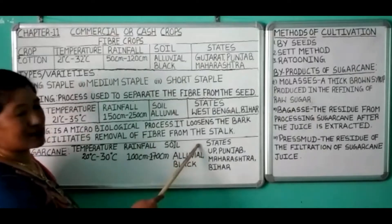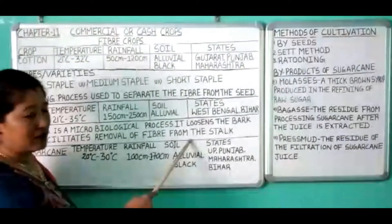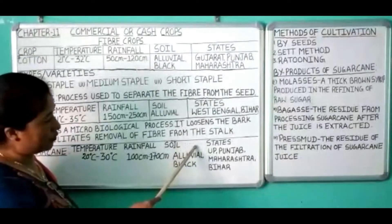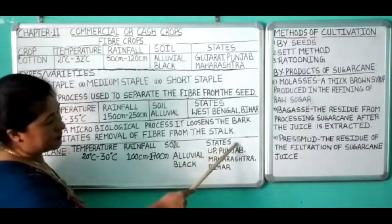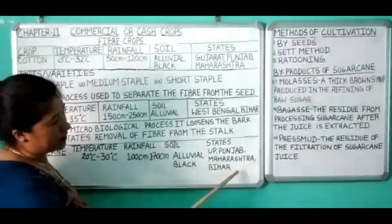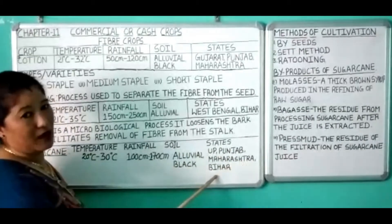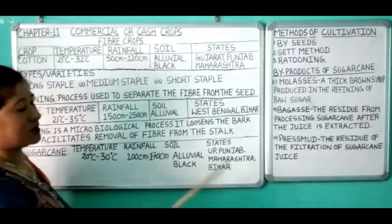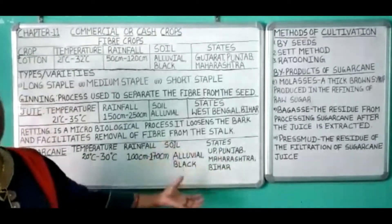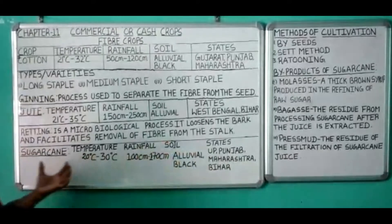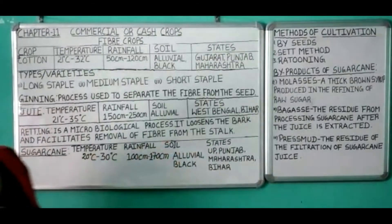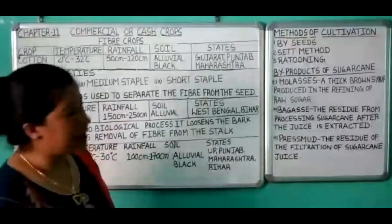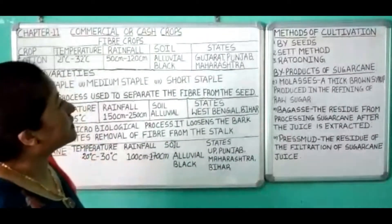The states where sugarcane is grown include Uttar Pradesh, Punjab, Maharashtra, and Bihar. These are some of the important states where sugarcane is cultivated in our country.